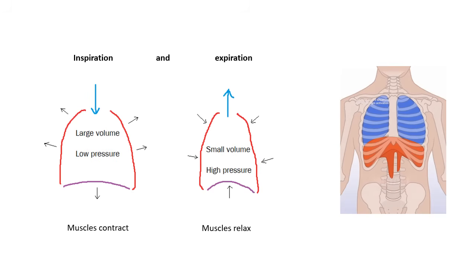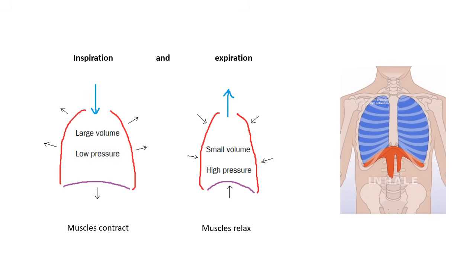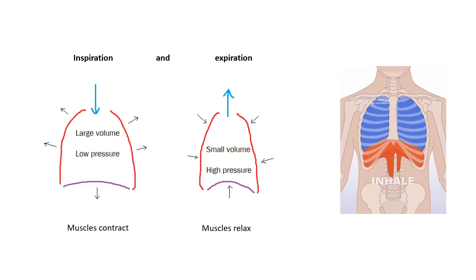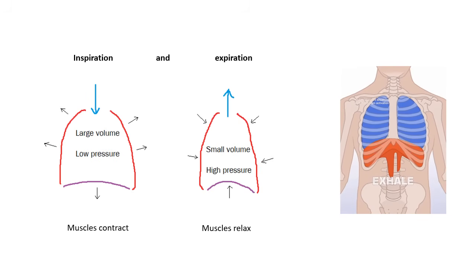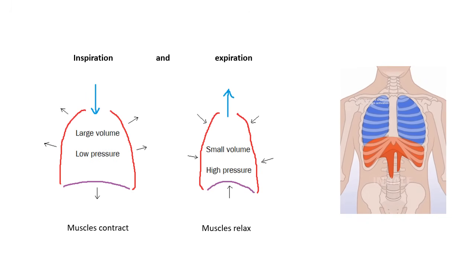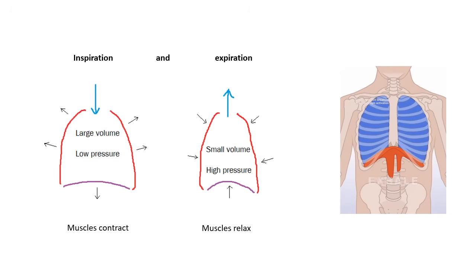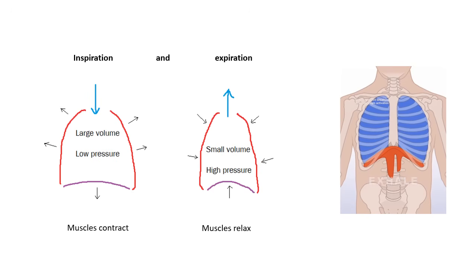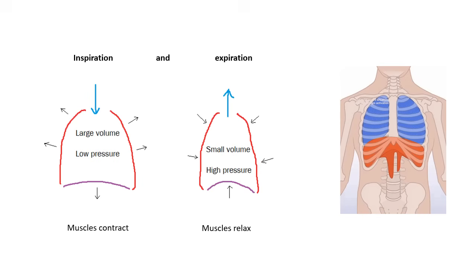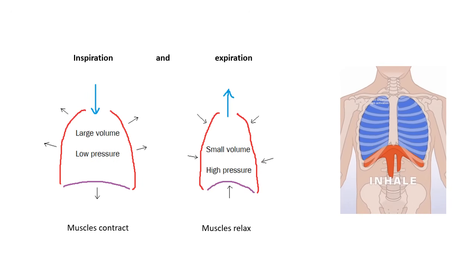Breathing out, or expiration: the muscles then relax. When the muscles relax, the diaphragm moves up, and the ribcage moves in and down because of the intercostal muscles. What happens now is that there is a smaller volume, and because the volume gets smaller — imagine you're squishing a syringe full of air — if the volume gets smaller, then the pressure gets higher, and this means that the air gets blown out of the lungs. So: when the muscles contract, the volume gets bigger, the pressure gets lower, air gets sucked in. When the muscles relax, the volume gets smaller, the pressure gets bigger, and air gets pushed out of the lungs.